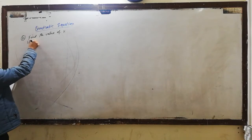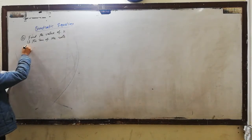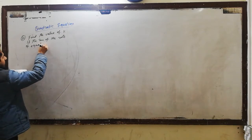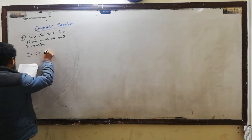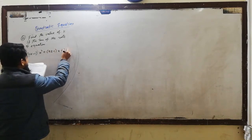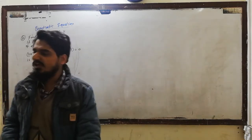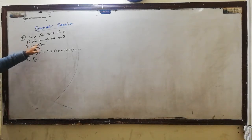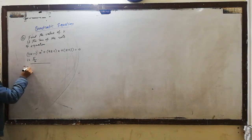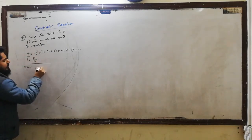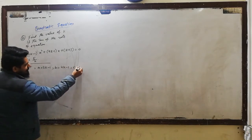K की value find करनी है। If the sum of the roots of the equation दी गई है, जो quadratic equation दी गई है: 2K-1 into X squared plus 4K-1 into X plus K plus 3 is equal to 0. First of all, data note करते हैं: A is equal to 2K-1, B is equal to 4K-1, and C is equal to K plus 3.